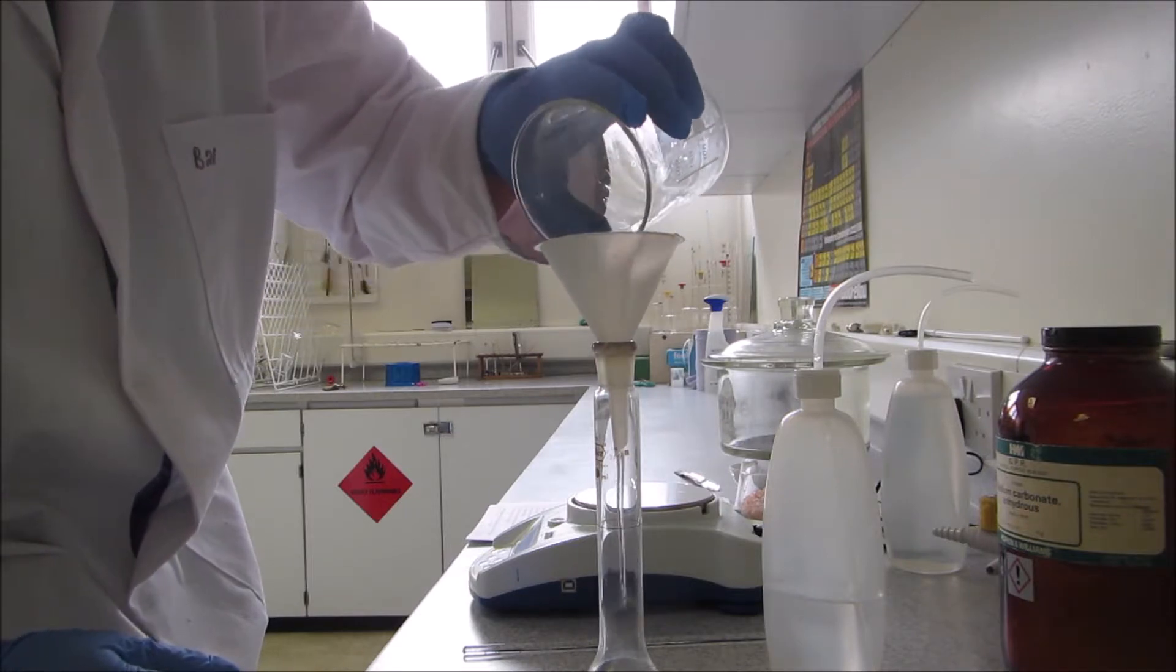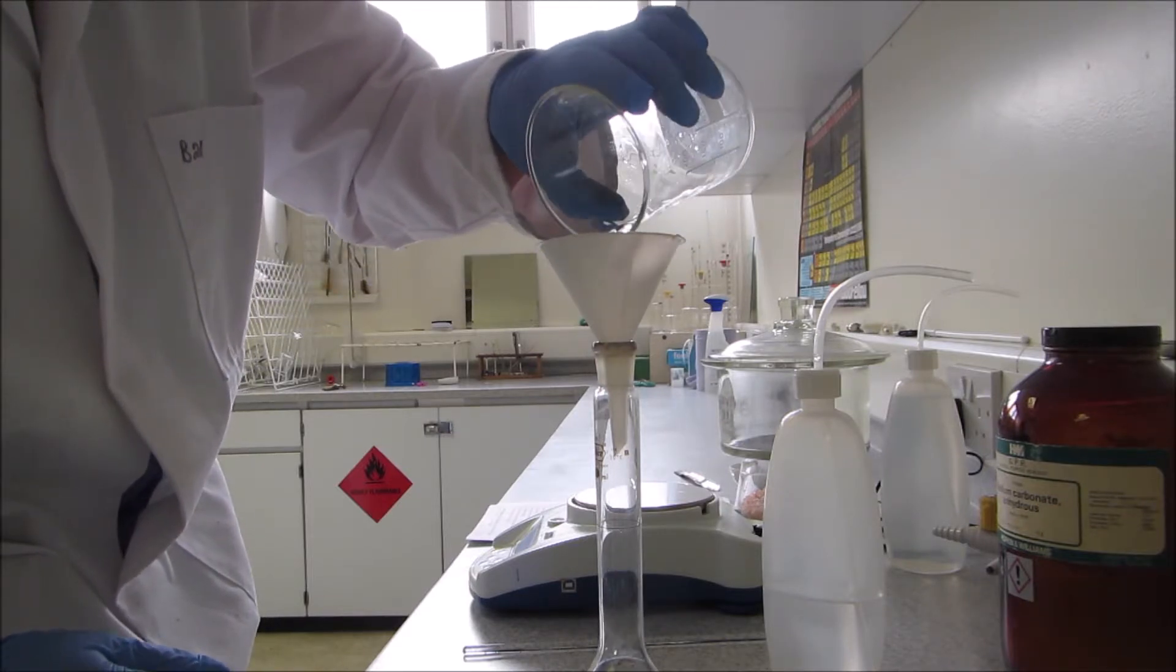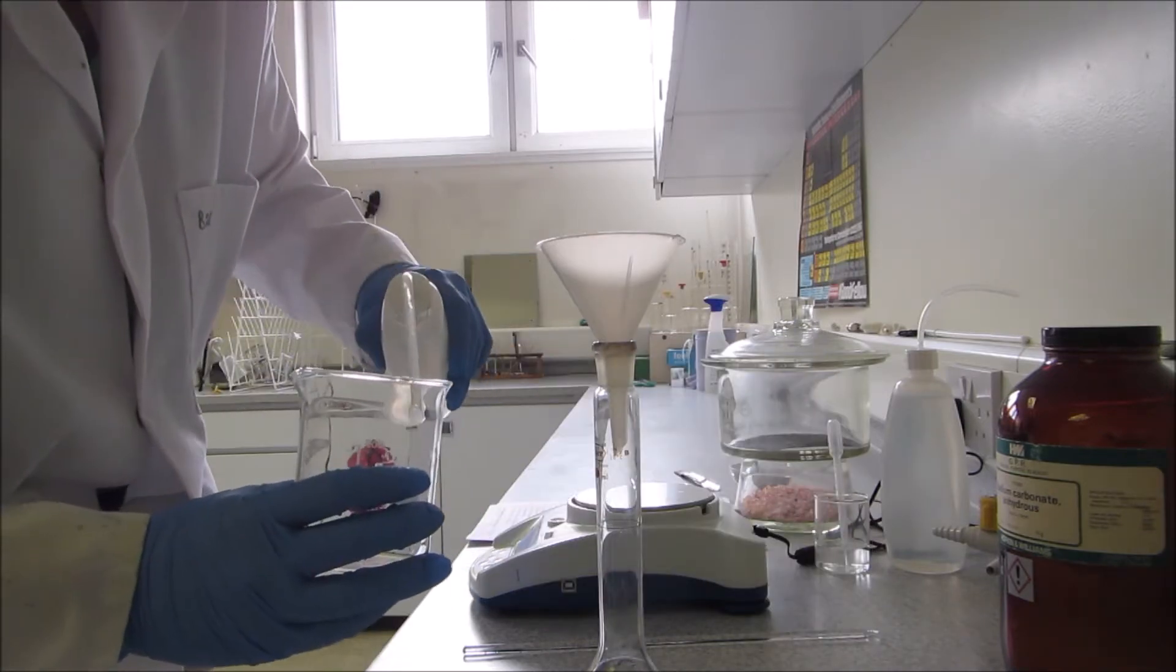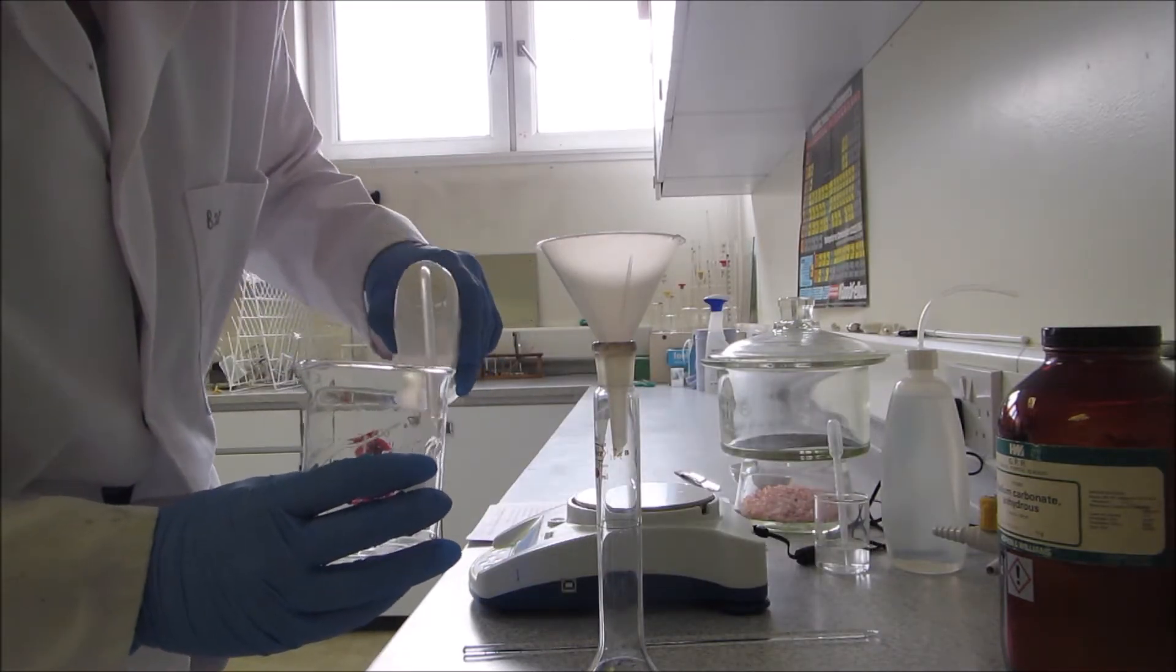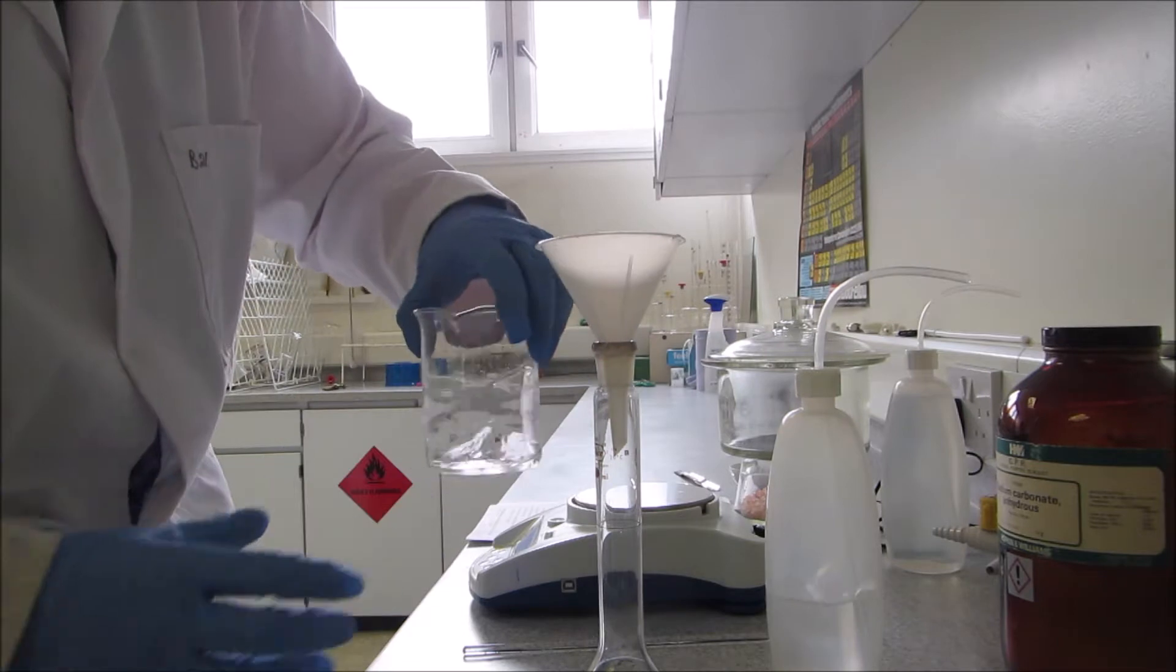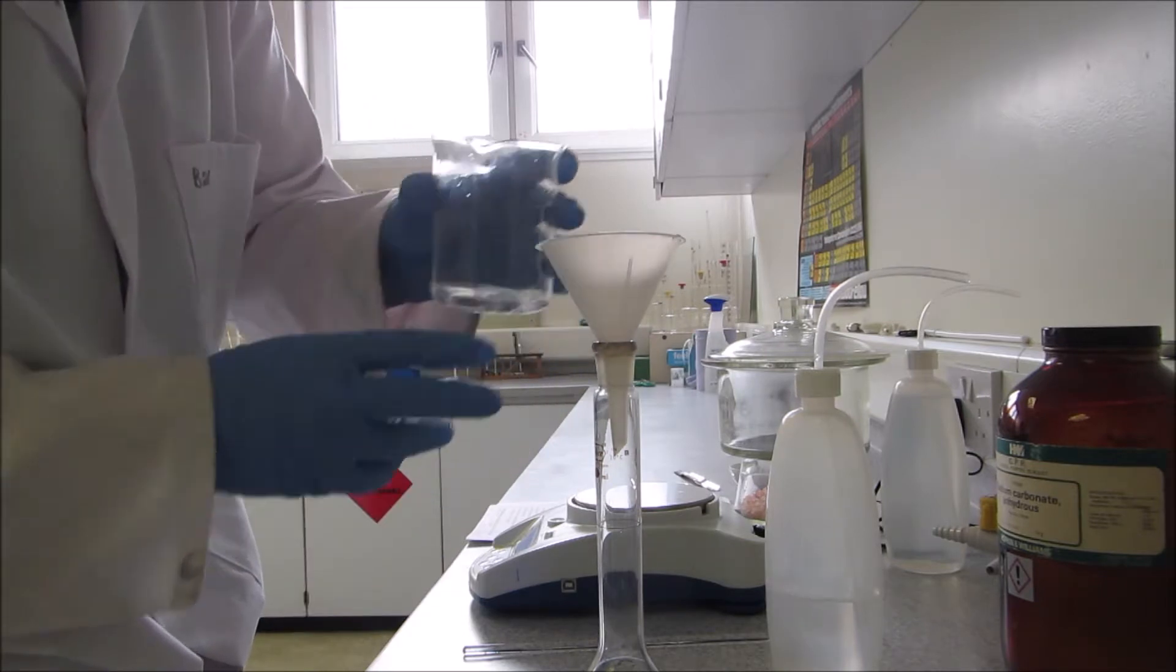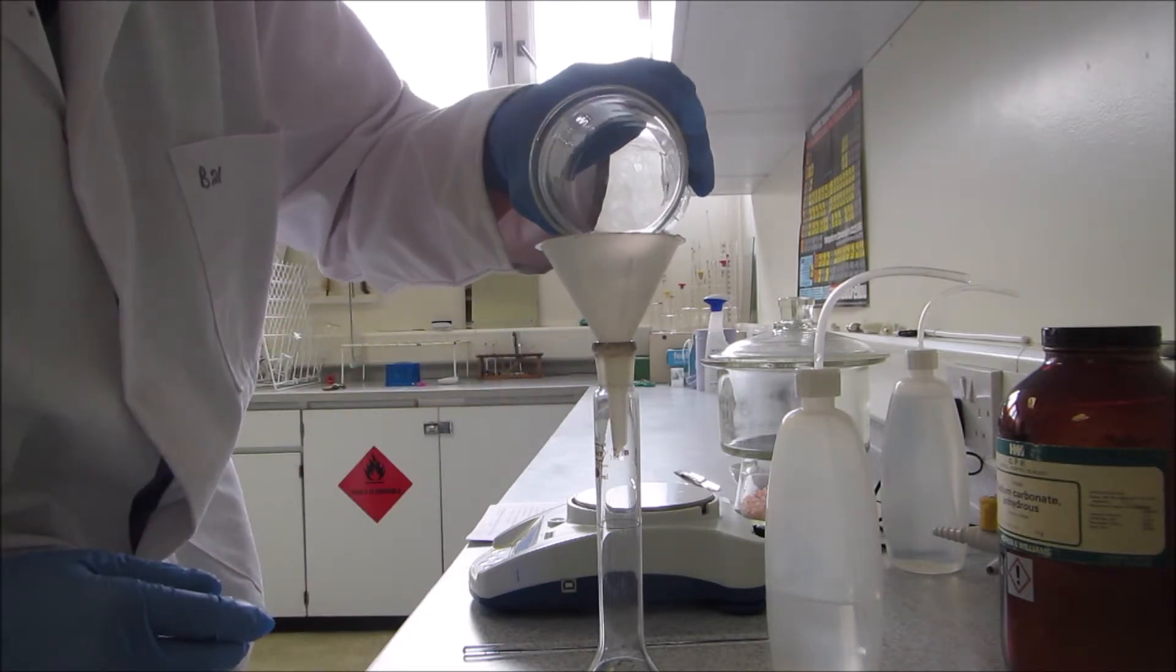Now again, there could be some of the sodium carbonate solution in my beaker, so I'm just going to add just a tiny bit of water and go around the edge of the beaker. Give it a swirl with my hand and pour that into my volumetric flask.